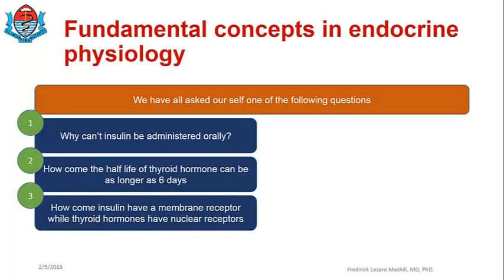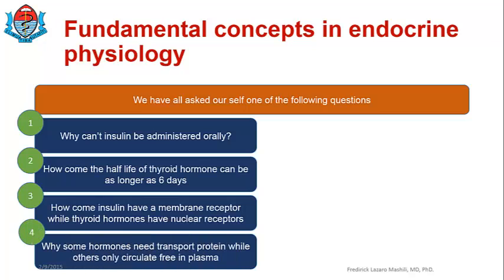Number three: how come insulin has a membrane receptor while thyroid hormones have nuclear receptors? Why are these differences? Number four: why do some hormones need a transport protein in the circulation — for example, thyroid hormone — while others like insulin circulate freely in plasma?